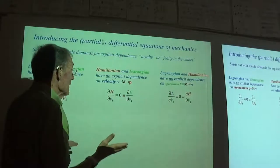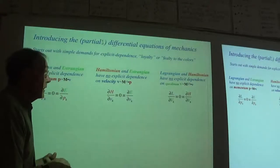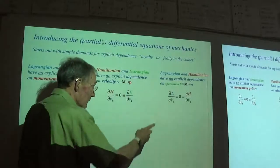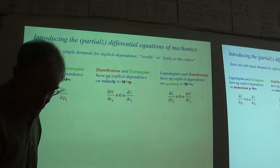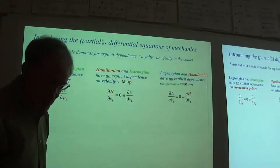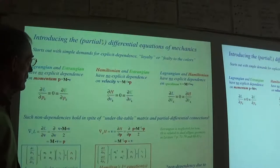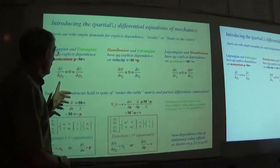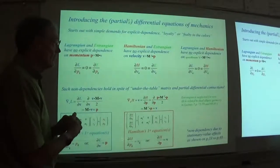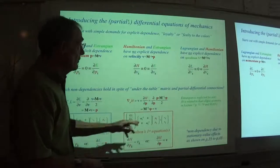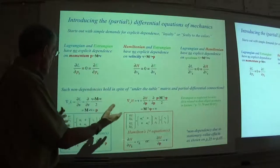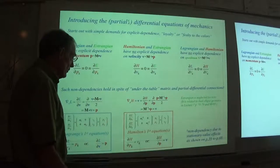The zeroth equations of mechanics express this loyalty: the partial derivative of the Lagrangian with respect to momentum is identically zero, as is the partial derivative of the Hamiltonian with respect to velocity. This loyalty is a very important part of mechanics calculus. We'll set aside the speedinium intermediate description and focus on just the Lagrangian and Hamiltonian.